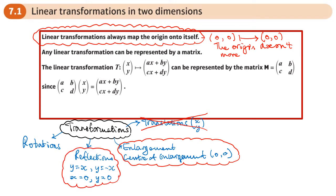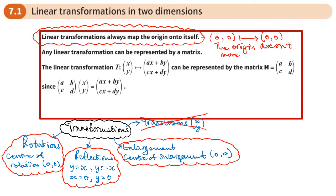That will be the case if we're reflecting in the line y = x, or y = −x. Those two pass through the origin. Also the x-axis and y-axis, which are the lines x = 0 and y = 0. As long as we're doing a reflection in those lines, the origin won't move. With rotation, if the centre of rotation is the origin, again the origin won't move — it's a linear transformation.